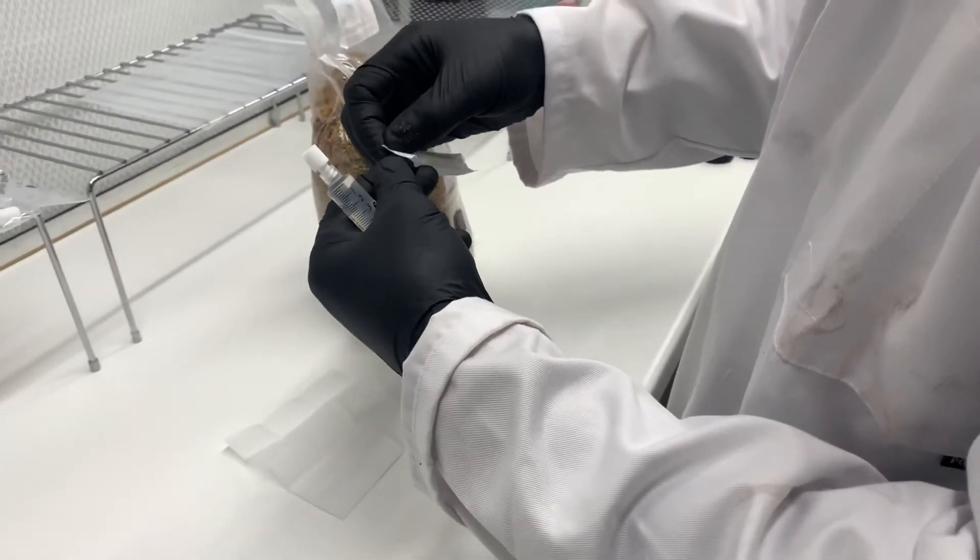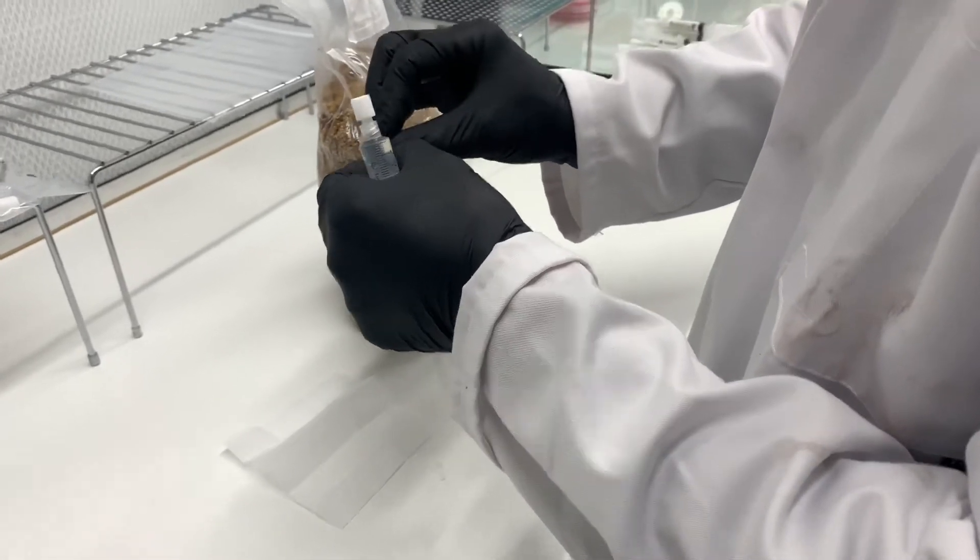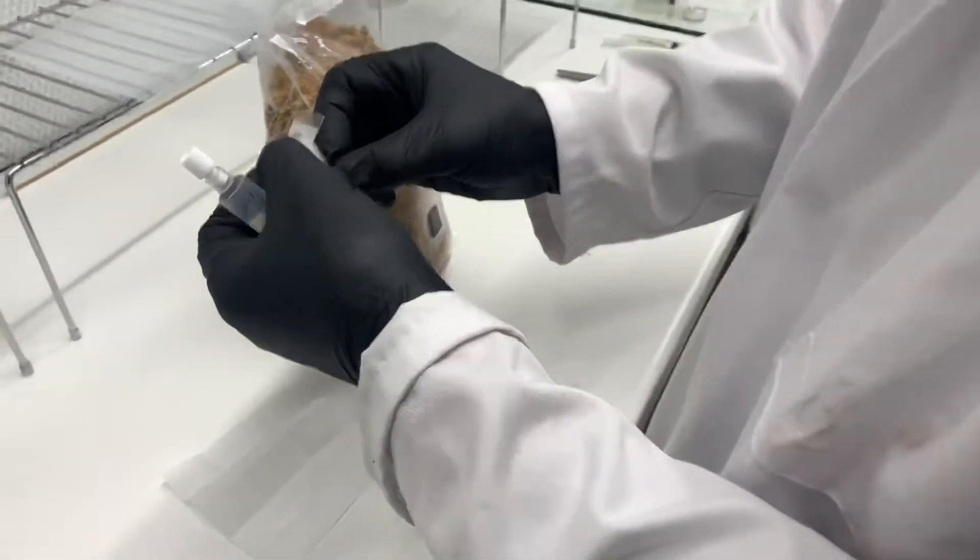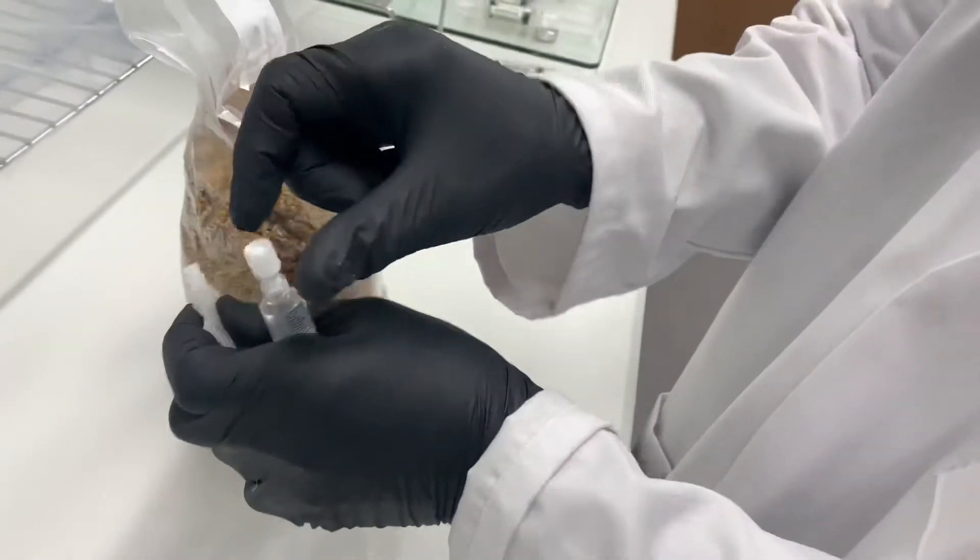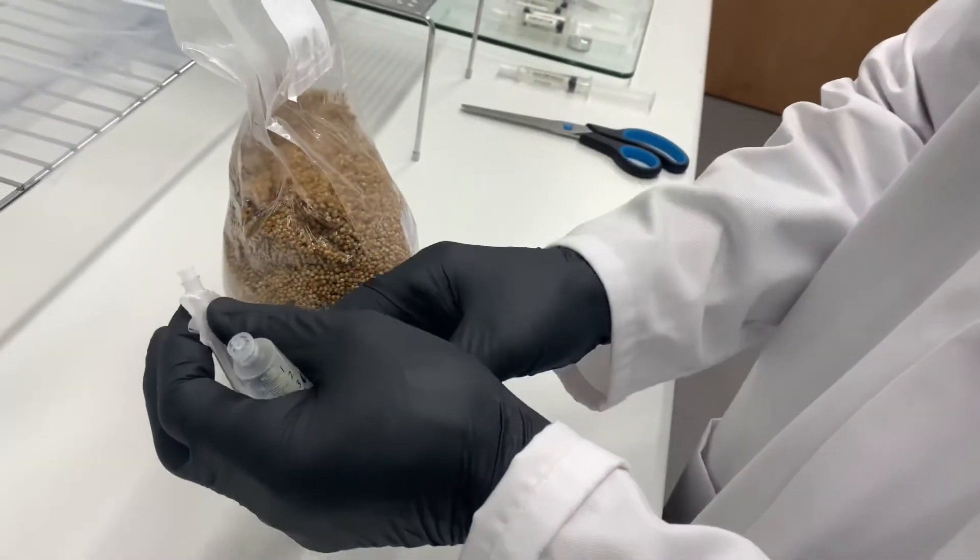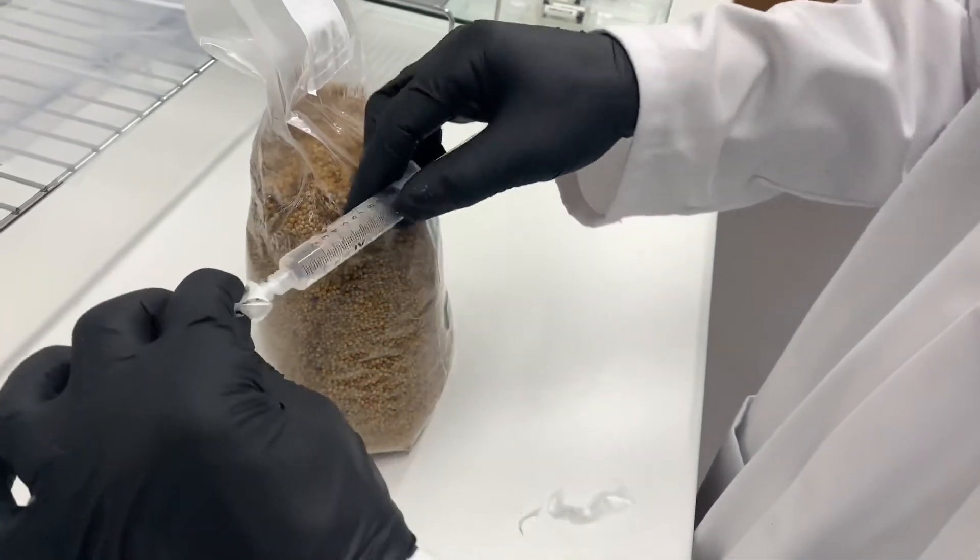All right, so next up we're going to unwrap our needle. Needles come sterile and individually packed, so you just open them from the tab end without touching the needle nozzle with your fingers. You're going to screw it into the luer lock.